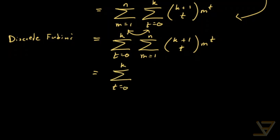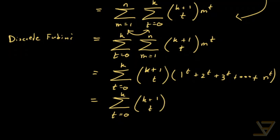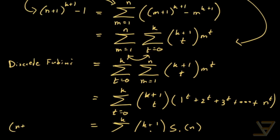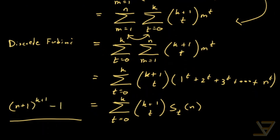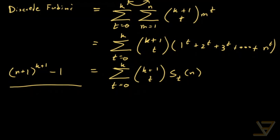So we get the sum from t equals 0 through k, with the inner sum from m equals 1 through n, of (k+1 choose t) times m to the t. Evaluating the inner sum, we get the sum from t equals 0 through k of (k+1 choose t) times S(t, n). The left side is (n+1) to the k+1 minus 1, so we can substitute in successive values of k and find what this equals.